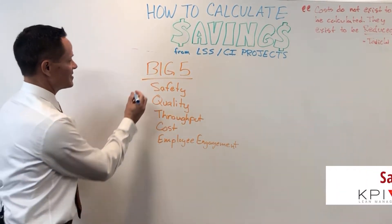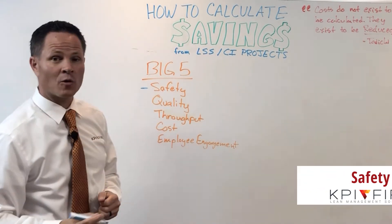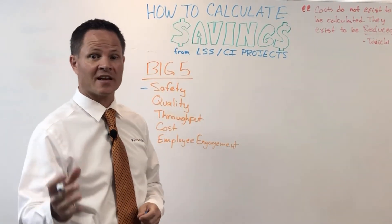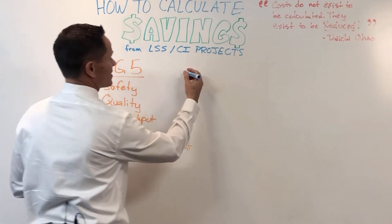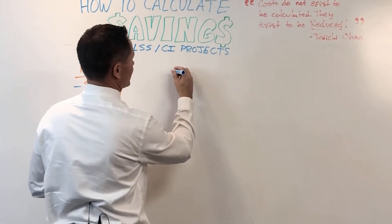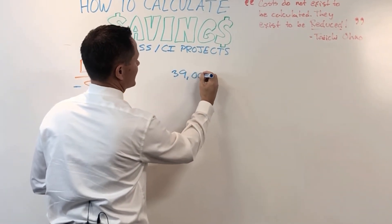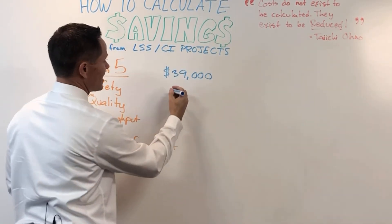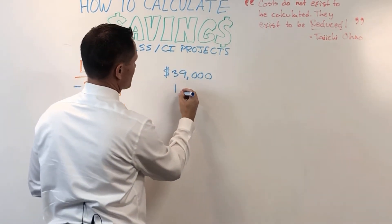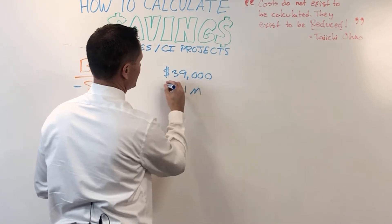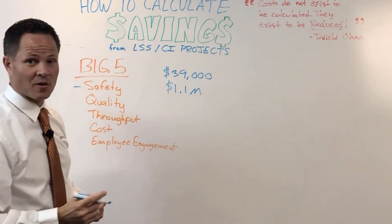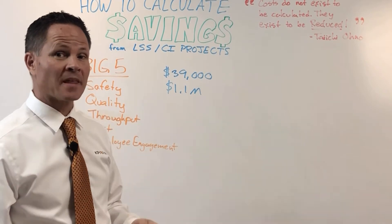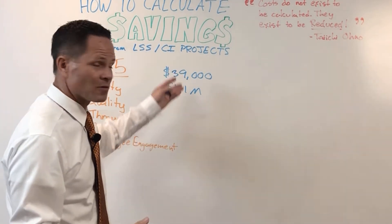Let's start with safety. According to the National Safety Council, which is a government organization that tracks these things, the cost of an injury is $39,000 and the cost of a death is $1.1 million. So if you have something happen at work, it's going to cost you a lot of money.